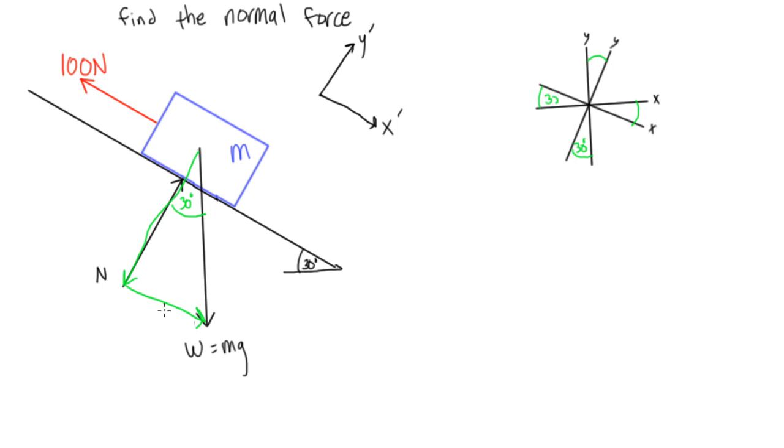So anyways, so we want to calculate the x prime direction, or the x prime magnitude of our weight vector here. So we'll have this one is equal to mg times sine of 30.